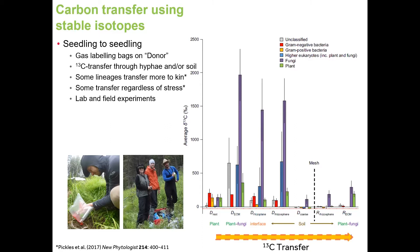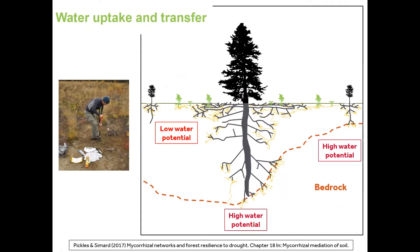In this work we found some evidence of kin-selected transfer — plants more closely related to each other seem to transfer more carbon in some cases. We're seeing transfer of carbon regardless of stress introduced, and we've been working on this in both lab and field experiments. In the field it's much harder, especially when being eaten alive by mosquitoes or black flies in central BC. We think a lot of what we're seeing when carbon moves from one plant to another are actually signaling molecules that include carbon — small quantities, but with significant differences.